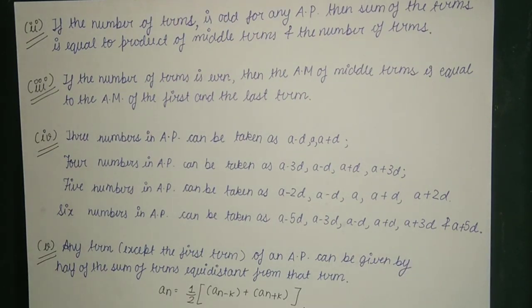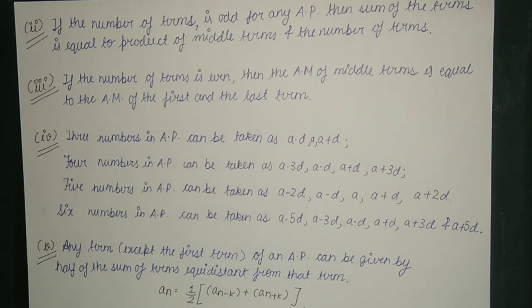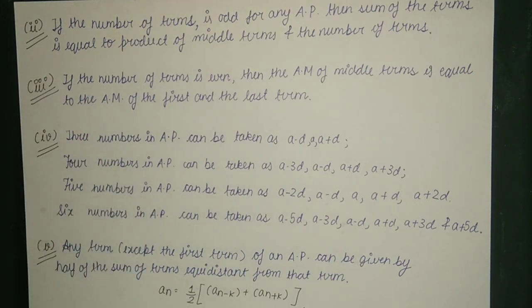Any term except the first term of an AP can be expressed as half the sum of terms equidistant from it. That is, a(n) = (1/2) × [a(n−k) + a(n+k)]. For example, a6 can be written as half of (a4 + a8), since 4 equals 6 minus 2 and 8 equals 6 plus 2 — meaning the sixth term is equidistant from a4 and a8.